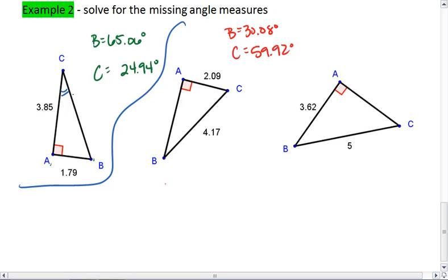The other way you could have set it is that C is cosine inverse of 2.09 over 4.17, which you plug this into your calculator, and it should still give you 59.92, which it does. So either way, it checks out.